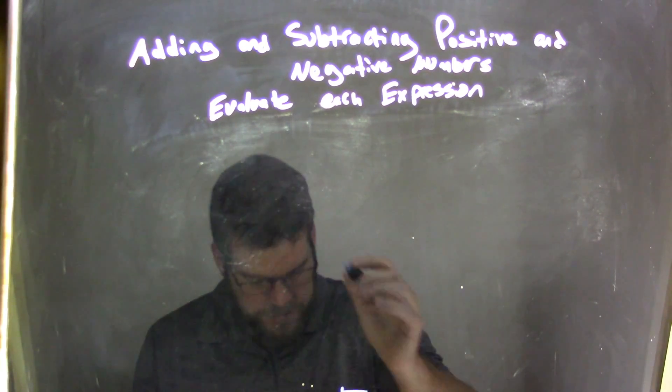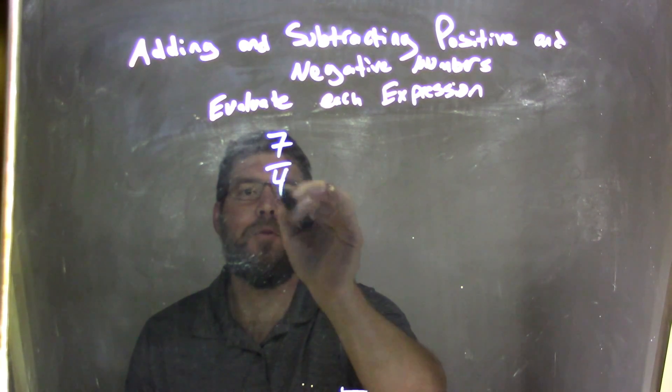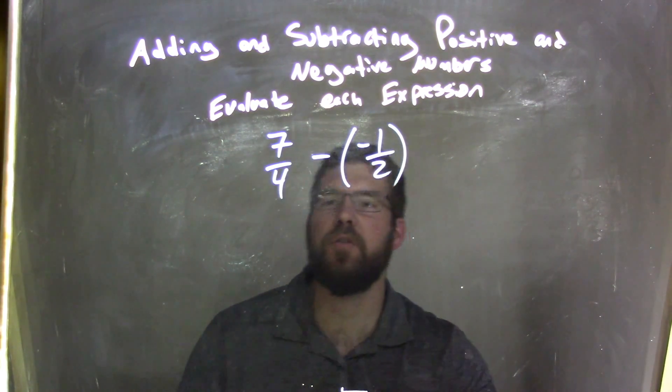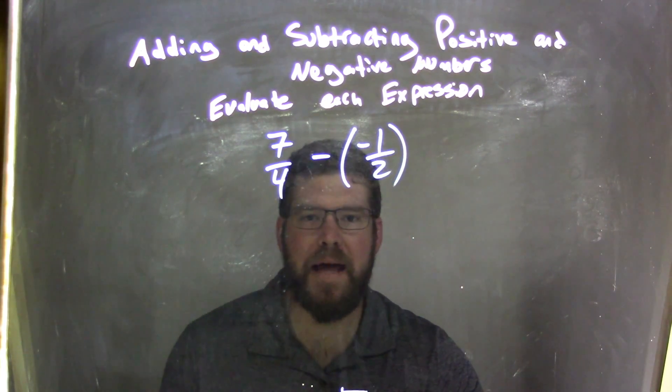If I was given this expression: 7 over 4 minus a negative 1 half. So 7 over 4 minus a negative 1 half.